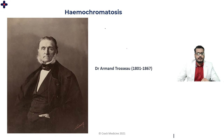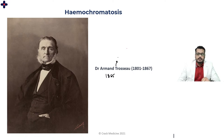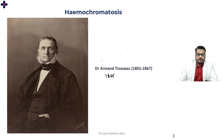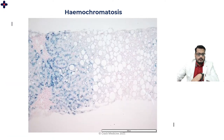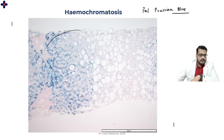Hemochromatosis was first described by Dr. Trousseau, who passed away in 1867 after describing it in 1865. This is the same Trousseau associated with the sign for malignancy — migratory thrombophlebitis. Dr. Pearl was the next one who described hemochromatosis in detail, finding the Prussian blue stain, with which you can stain the iron deposition in tissues.